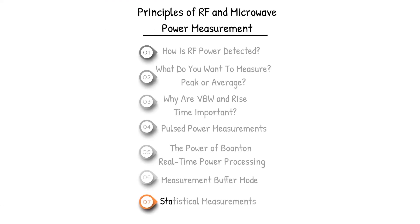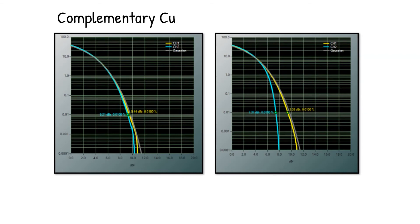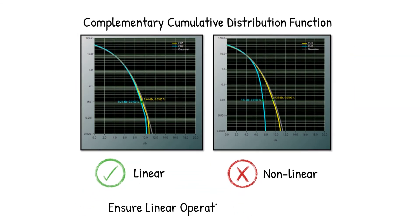Statistical measurements have become a more effective way to analyze noise-like modulated signals. The complementary cumulative distribution function, for example, shows the rate of occurrence of a specific crest factor to help ensure linear operation of components.